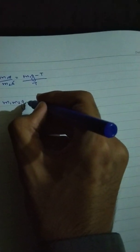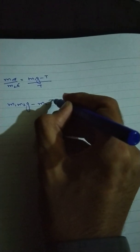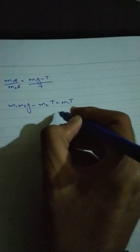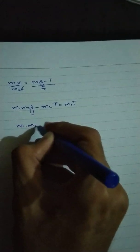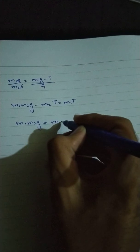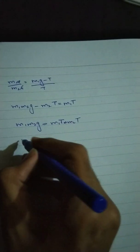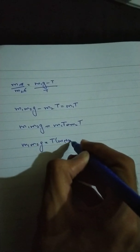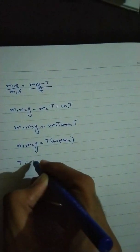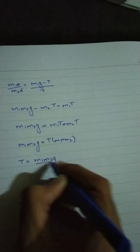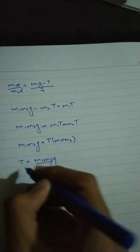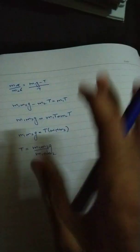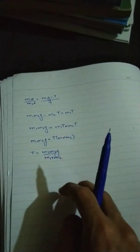Gravity on one side, tension on one side. Tension is isolated: T equals 2 M1 M2 G upon M1 plus M2. This is acceleration and tension. Tension in a horizontal spring versus vertical spring, which will be uploaded after this video.